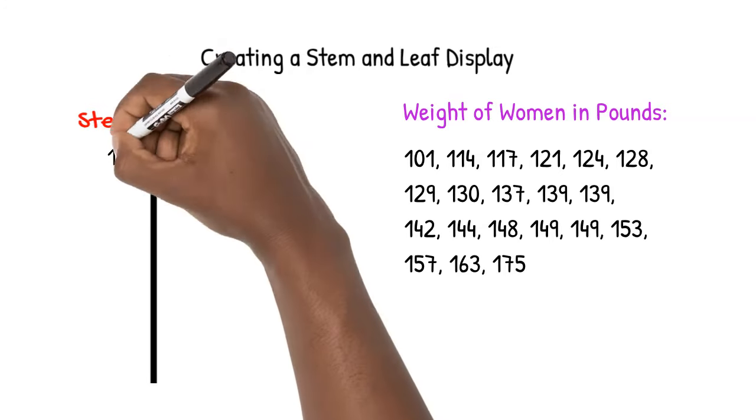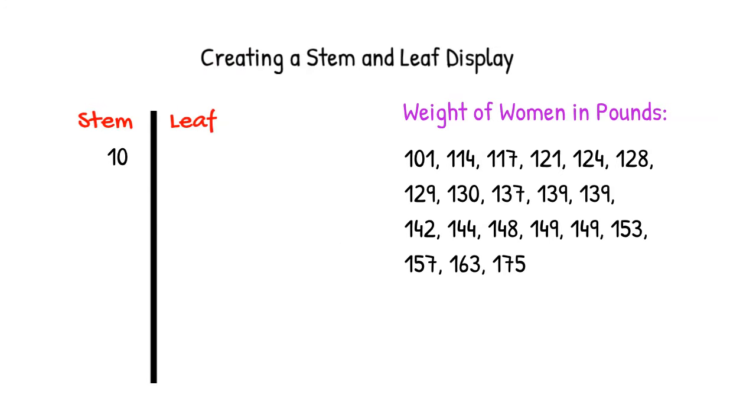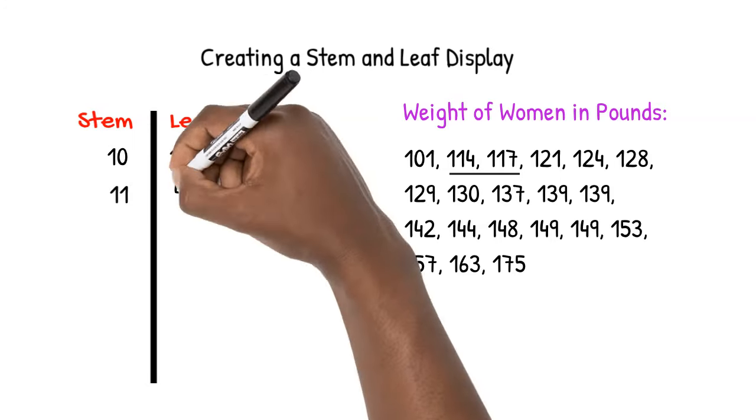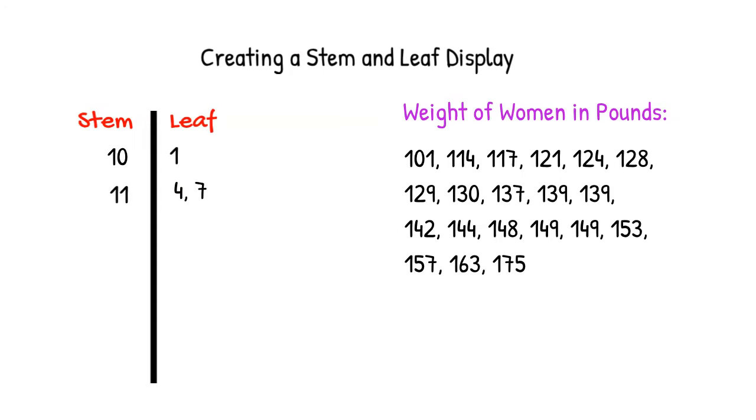Our first stem is 10. One number starts with those digits. Since it ends in 1, we put 1 here. Our next stem is 11. Two numbers start with those digits. The third digits are 4 and 7, respectively.